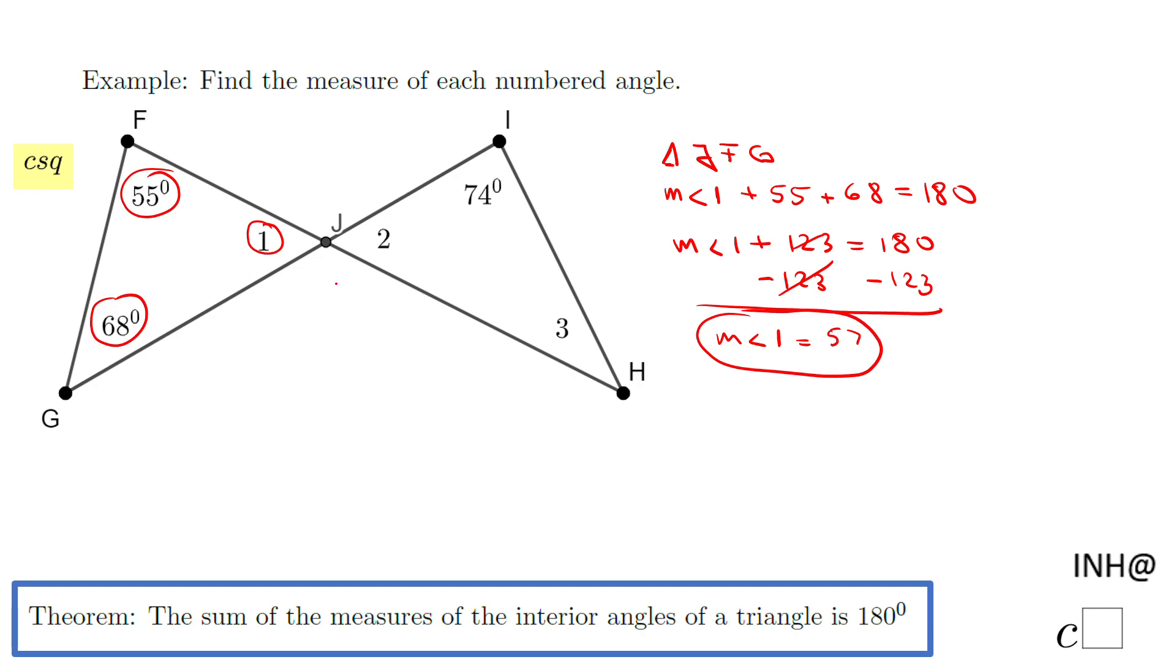So once we solved angle 1, we can move to angle 2. If you notice, angle 1 and angle 2 are congruent. Why? Because these angles are vertical angles. So the measure of angle 2 will be the same as the measure of angle 1, so 57 degrees. And we have one more to find out, that will be angle 3, which